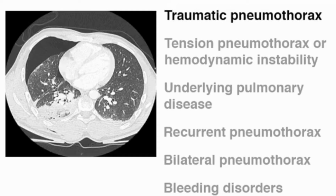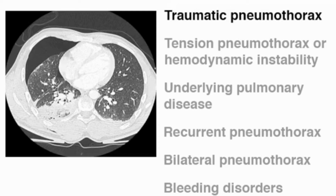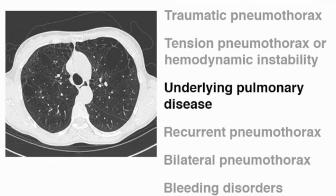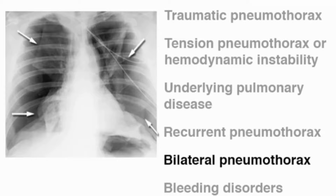Aspiration is contraindicated when a patient has a traumatic pneumothorax or when tension pneumothorax is suspected. Hemodynamic instability also constitutes a contraindication. You should also avoid using needle aspiration in patients with underlying pulmonary disease, a history of recurrent pneumothorax, bilateral pneumothorax, or a bleeding disorder.